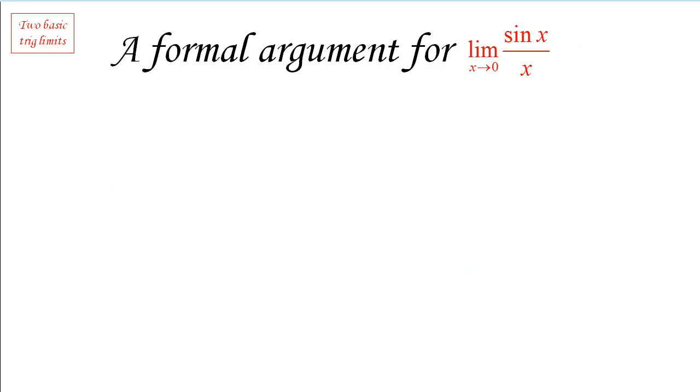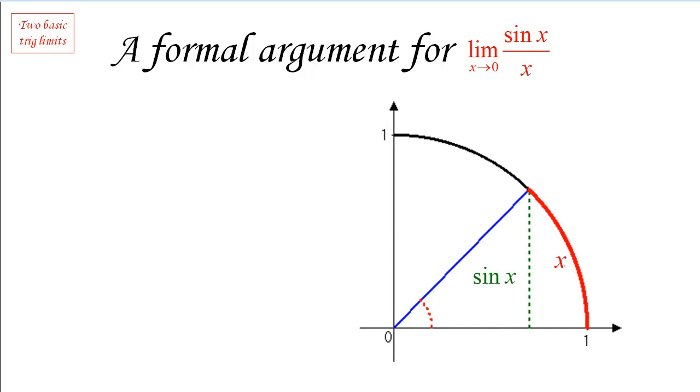So, I'm going to give you a more formal argument for that limit and this is again the traditional argument that is given. It starts in the same way so we're still looking at the same picture and we're noticing that sine x is the vertical segment joining the point to the x-axis, x is the length of the arc and we're going to need one more piece namely the geometric interpretation of tan x. I don't know if you're familiar with this but it turns out that the tan x is going to be given by the length along the tangent line to the circle at the point one zero which is cut off by the radius of the angle x. That's why that thing is called the tangent of x.